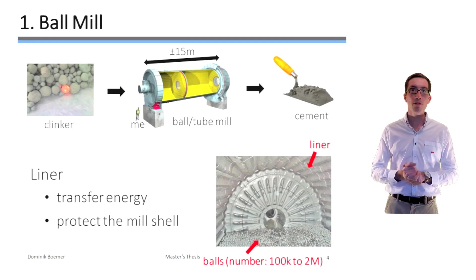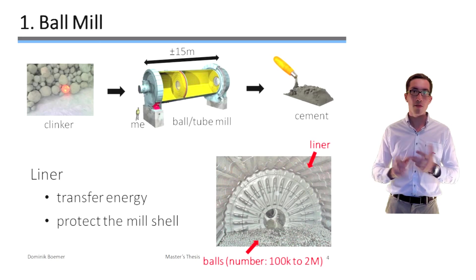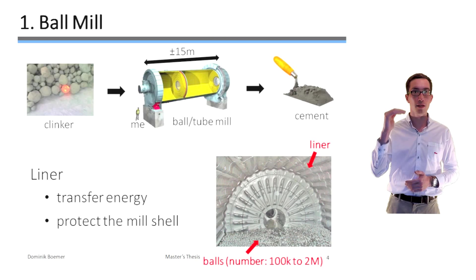Therefore, the operational performance of the mill depends not only on its operating conditions like the filling ratio and the rotation speed but also on the liner itself. For this reason, the slightest improvement of the liner design can become a serious competitive advantage.